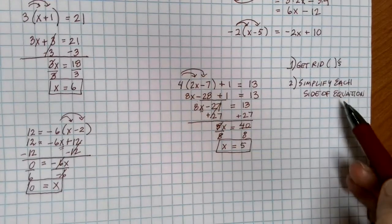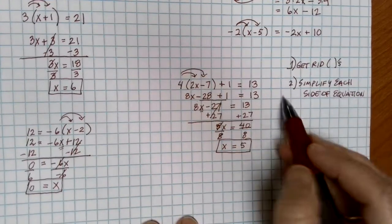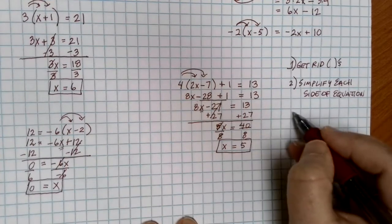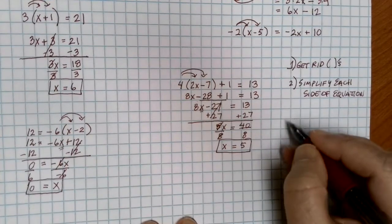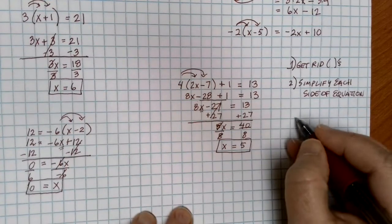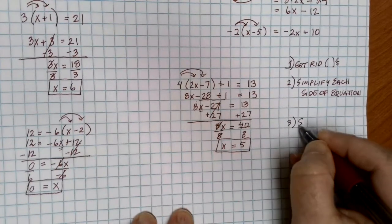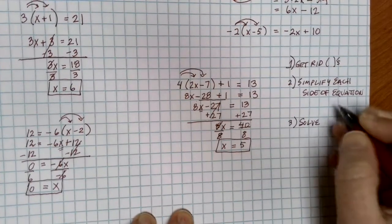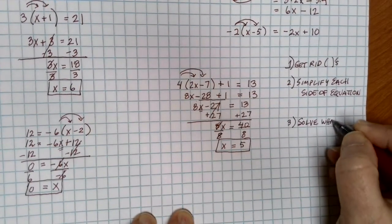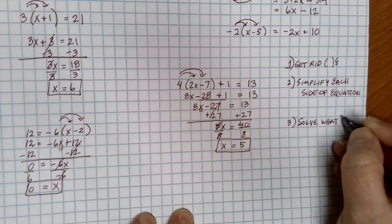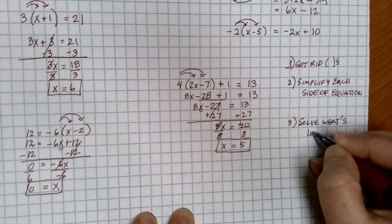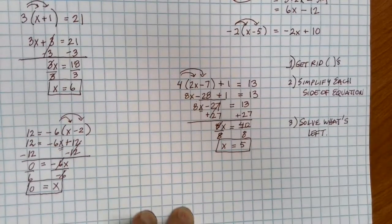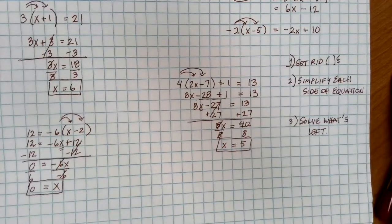And I'm left with x equals 40 divided by 8, which is 5. So the process is: get rid of your parentheses, simplify each side of the equation, and once you get to that point, you should be able to solve whatever remains. It breaks down to our two-step equations.